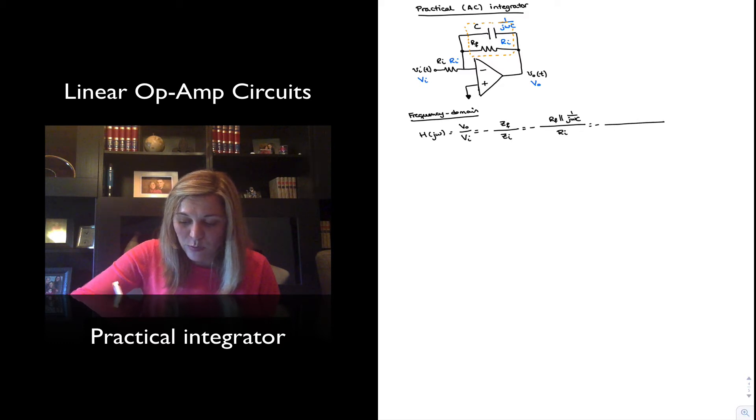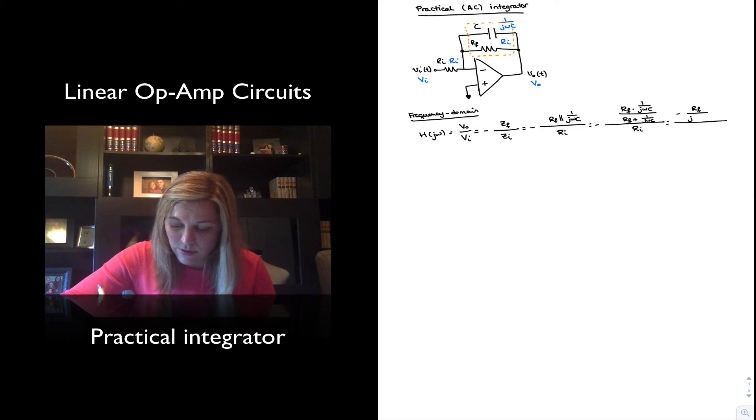That parallel combination we can express as the product of the impedances divided by the sum, so RF times 1 over j omega C divided by RF plus 1 over j omega C, all that divided by Ri. And so we could express that as RF negative divided by j omega C, all that divided times Ri times RF plus 1 over j omega C, which will basically be Ri.